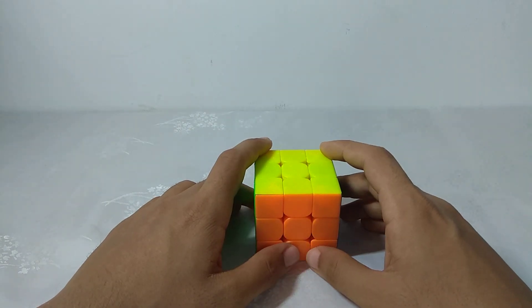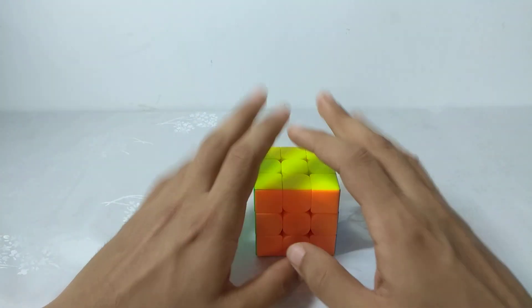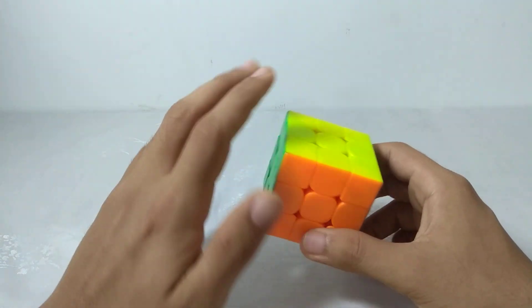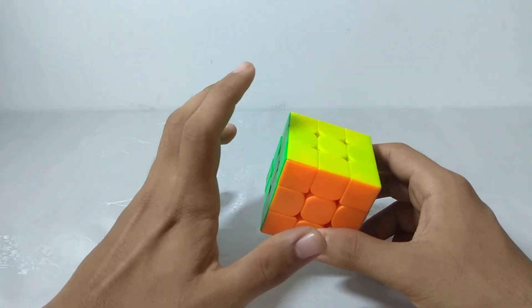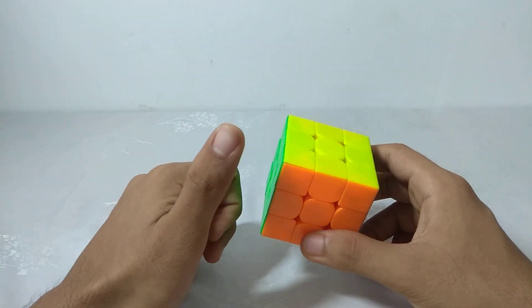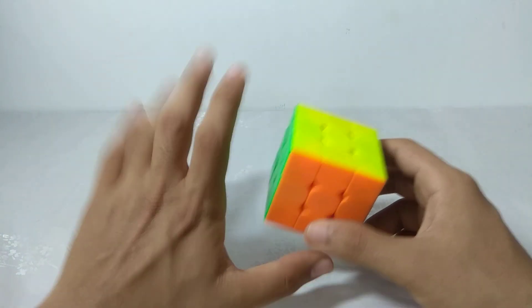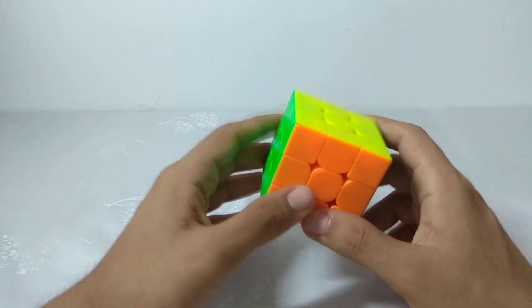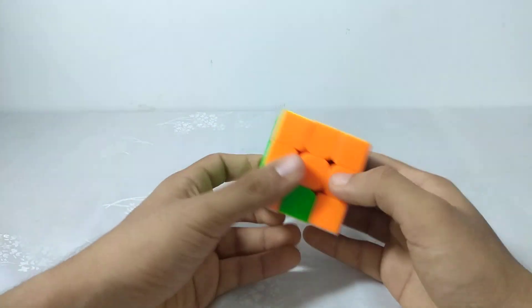You should be almost fluent with 3-style with no parity. You don't need to know more than one algorithm for one case - you can just do one algorithm.